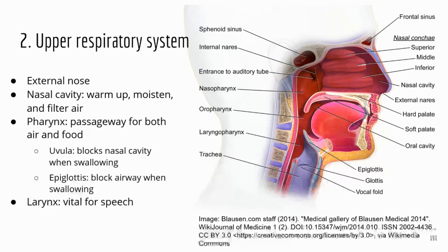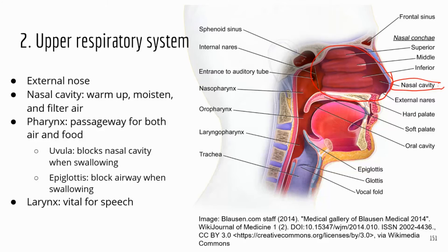There are quite a few structures in the respiratory system. We're going to look at the upper respiratory system first, following the pathway for air when you inhale. The air is going to go through the nasal cavity first. The nasal cavity warms up, moistens, and filters air — the nose hair and mucus in the nasal cavity help filter the air.